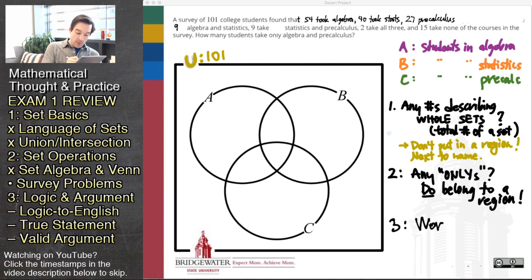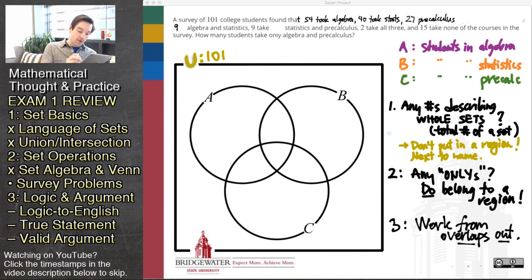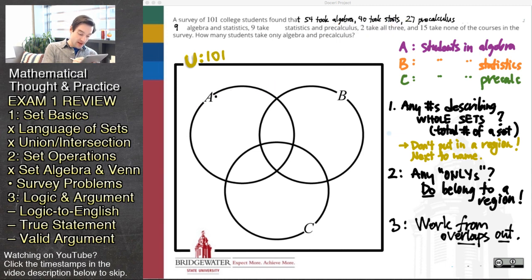If we don't have the word 'only,' what we need to do is work from the overlaps outward. We go to the place in the Venn diagram at which the most number of circles overlap. If we know the cardinal number there, we write it in, and then work our way outward to where only two sets overlap, figure out if we can quantify those overlaps, and then from there work outward to regions in one set but not the other two. Following our step-by-step: 101 is the universal total. Now that I've taken the word 'only' out, the numbers 54, 40, and 27 describe the entirety of sets A, B, and C respectively. There need to be 54 total respondents inside the A circle across its four regions. Since two students take all three, we start by writing two in the center.